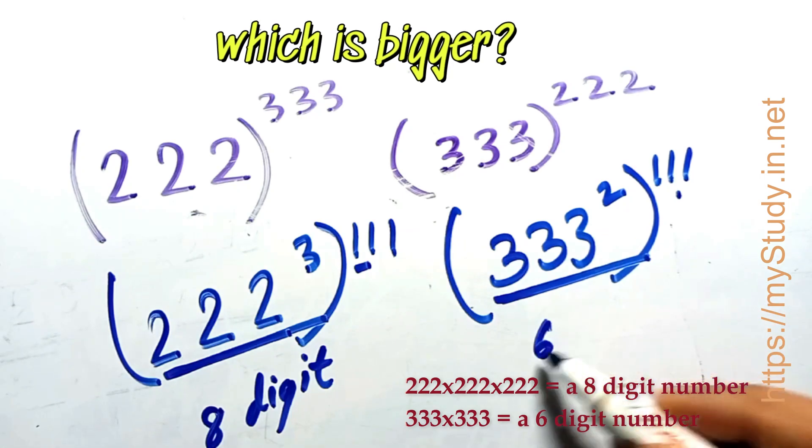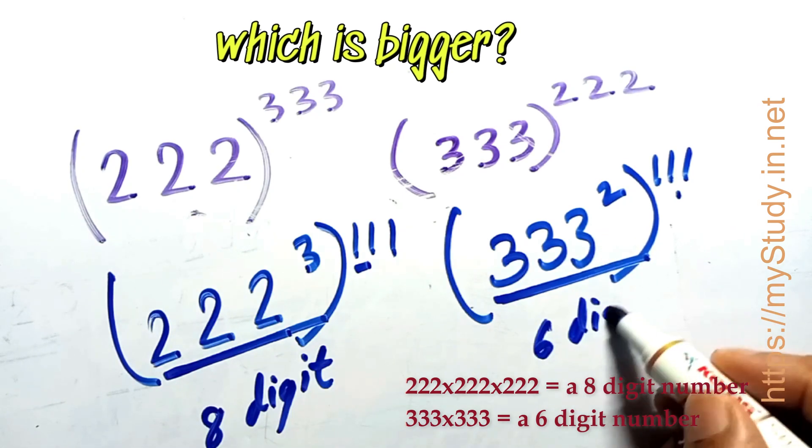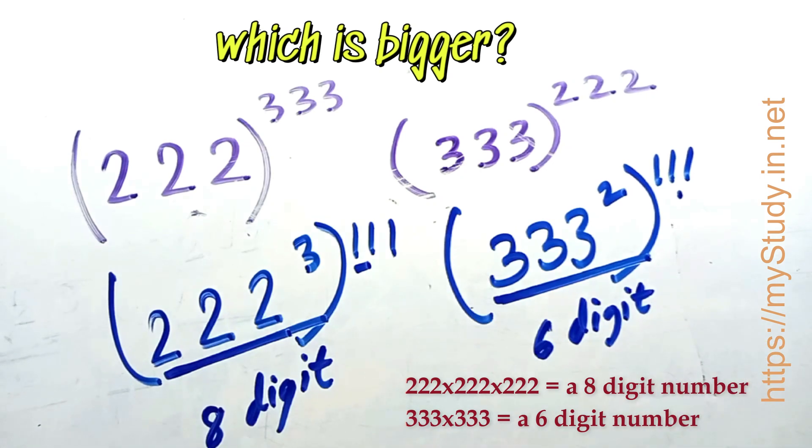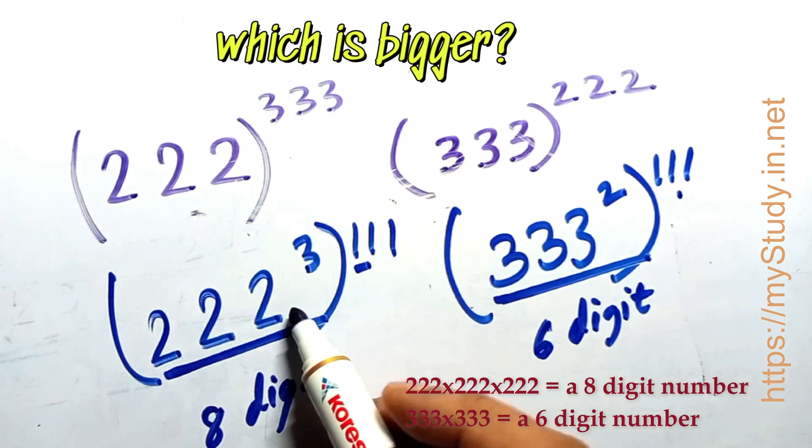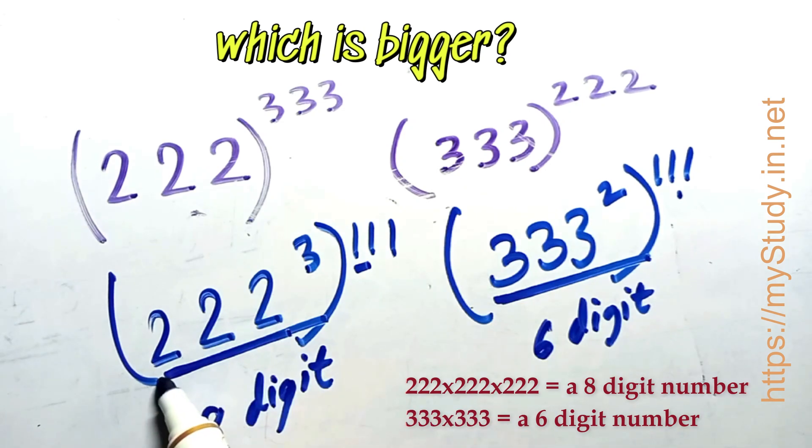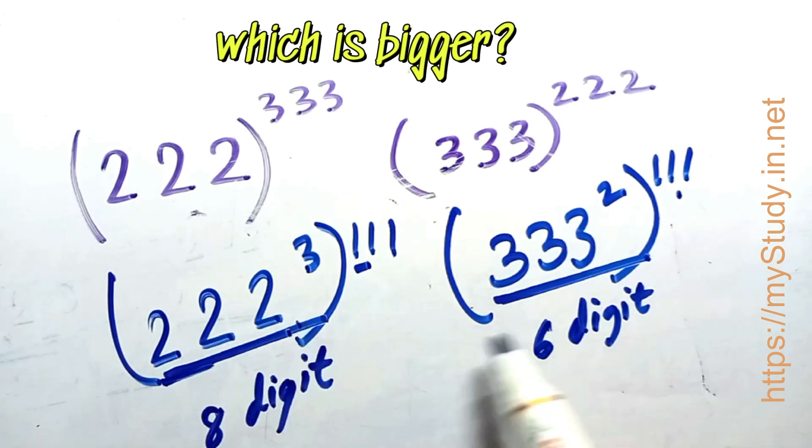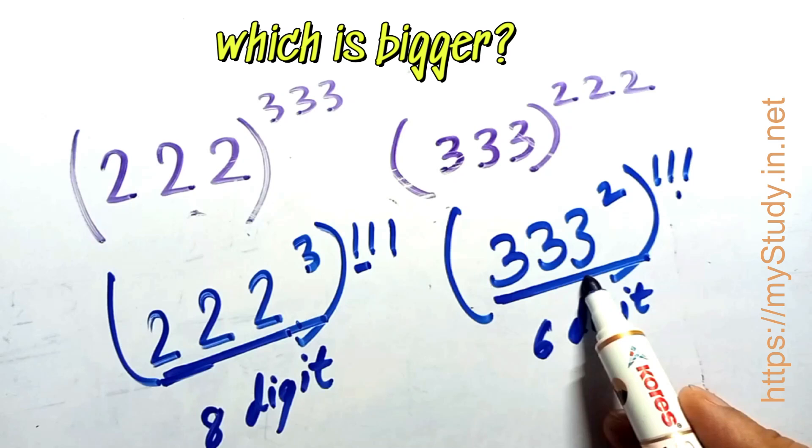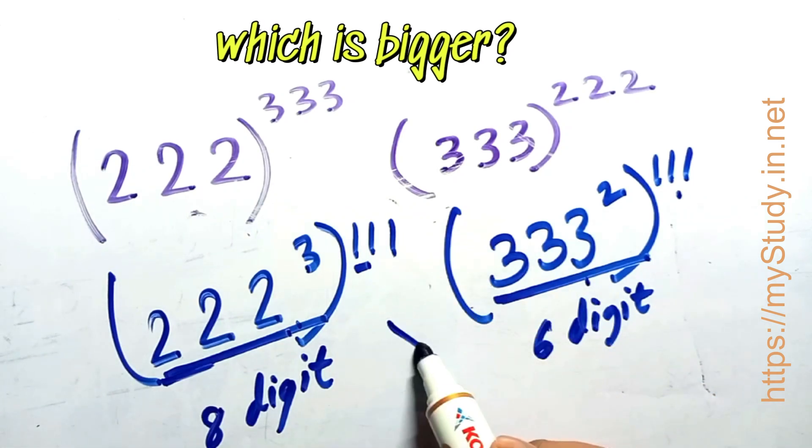You'll get a six digit number, because it is multiplied thrice. So surely this will be a bigger number than this, and that is why this one is bigger.